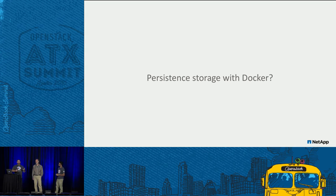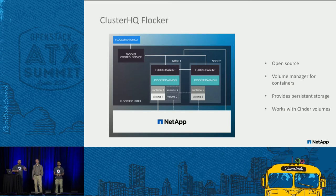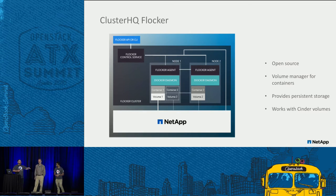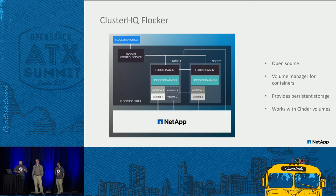If I take my application and move it from a Nova instance into a container, the storage need doesn't go away. Now we have to attach storage directly to the container. One of the first solutions NetApp worked with was a company called Cluster HQ, which has a product called Flocker. They have Cinder integration for OpenStack. If you're running a Docker cluster — Swarm, Kubernetes, Mesos, whatever it happens to be — and you want to leverage Flocker, you can use it to automatically provision and attach Cinder volumes. Flocker manages those volumes regardless of where the container instance gets created, so if you move a container from host A to host B, Flocker manages that movement as well.